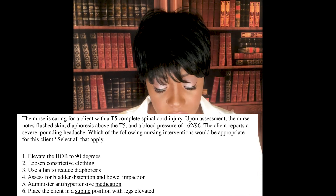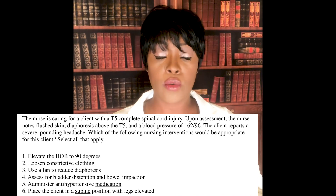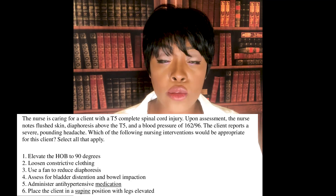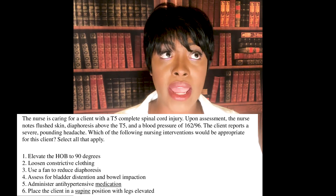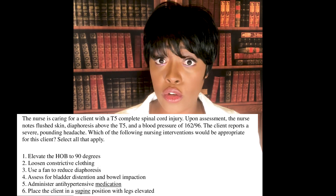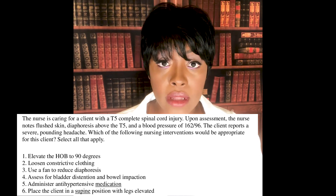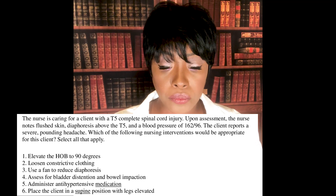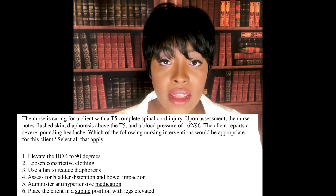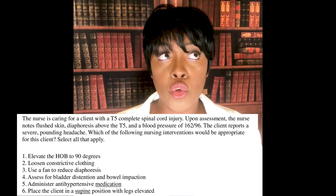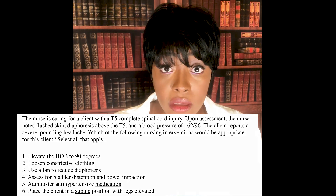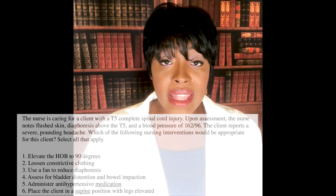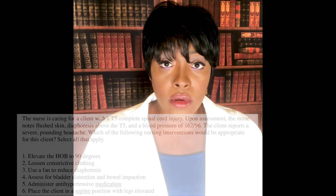One thing I want to point out: choice five said 'administer antihypertensive.' I notice students struggle with questions that say 'administer medication' without saying 'as ordered.' Let me make this clear — if administering a medication is your answer choice, it is implied that you have an order for it. The question does not have to say 'as ordered.' What you cannot do is choose something outside your scope of practice. But if the answer is to give a medication, that is within your scope, and it is implied the order exists. Keep that in mind for NCLEX.